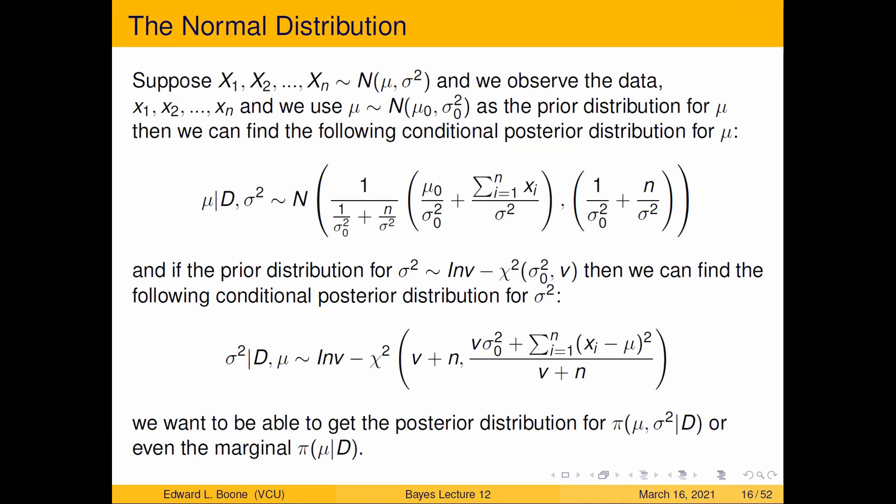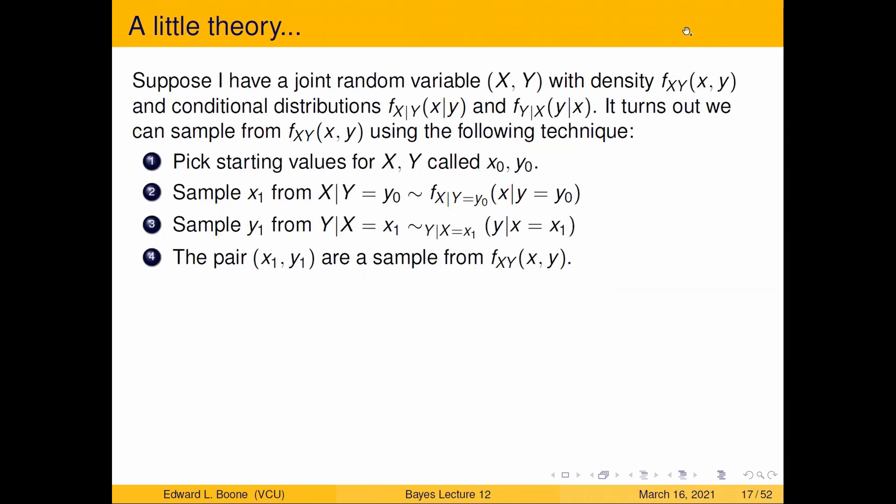Welcome to Bayesian Statistics. We're talking about the normal distribution again. Last time, this is right where we left off on this exact slide. Why do I have this all here? Because we're going to worry about these conditional distributions. We ultimately want to be able to sample from the posterior distribution of mu and sigma squared given the data. And we're going to see if we can't do that in this video by using Gibbs sampling.